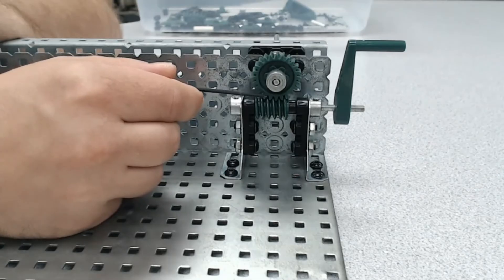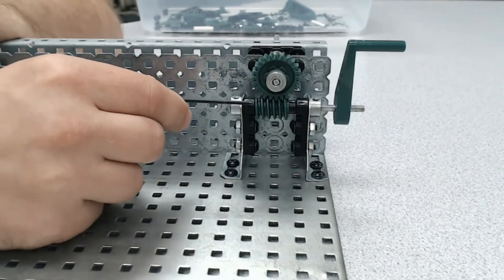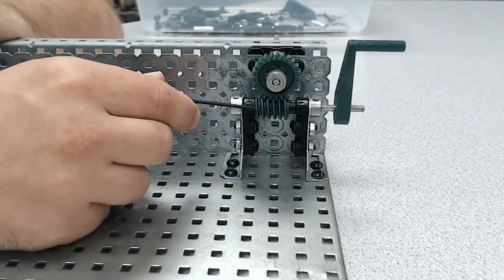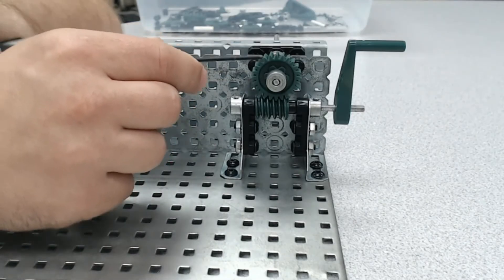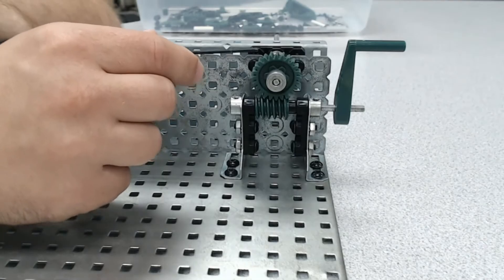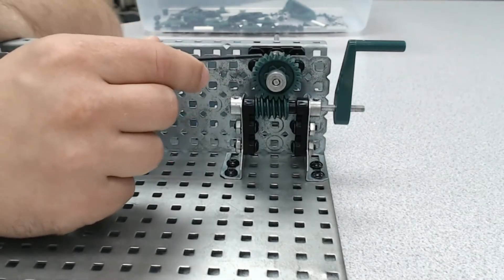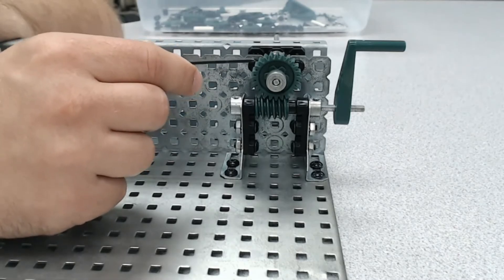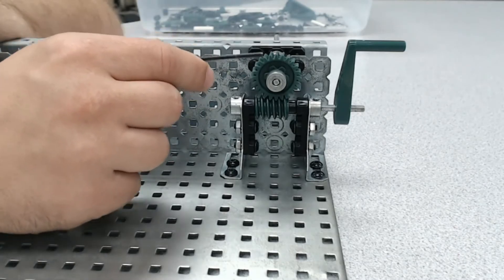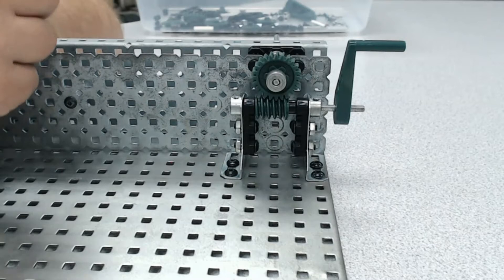That wheel only moved one groove. Only one tooth moved over for one full rotation here. So that means that to turn this all the way around, we need to figure out how many teeth are on this gear. If we were to count this out, we would find there's 24 teeth on here.